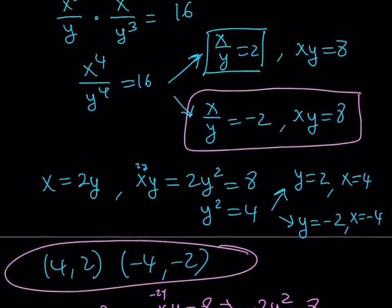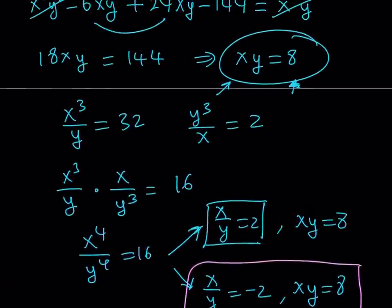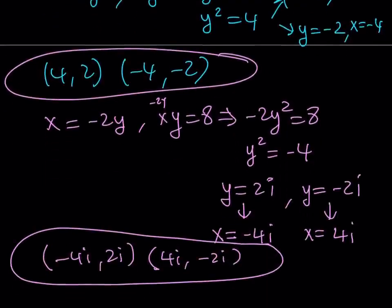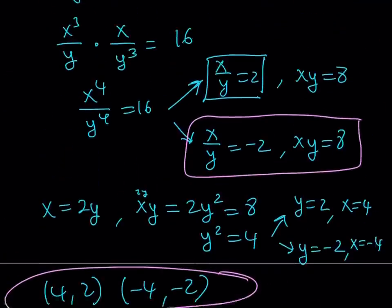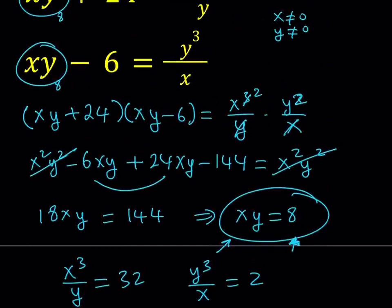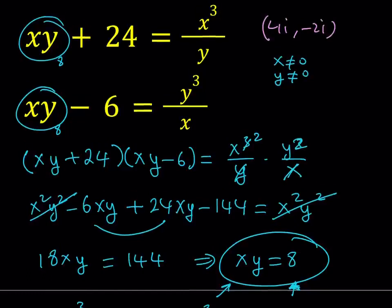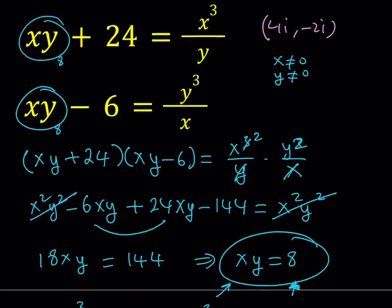Now here's one thing you may want to think about. Like, is this going to satisfy the original problem? For example, if I take, let's say, how about 4i comma negative 2i? Let's go ahead and test it out.